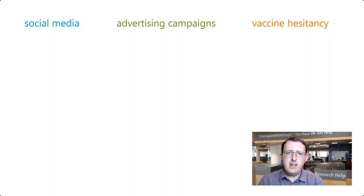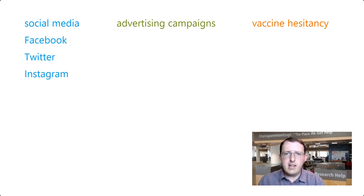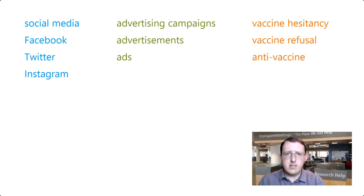It is often helpful to create a table, with each core concept having its own column. Under each core concept, list other terms that authors might have used to refer to those concepts. By incorporating synonymous and like terms into your search strategy, your search will be more sensitive, returning more potentially relevant results.